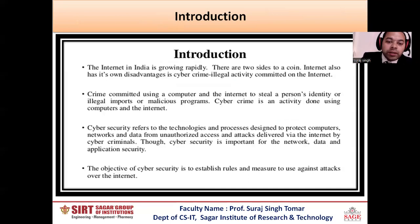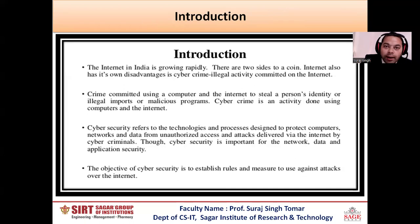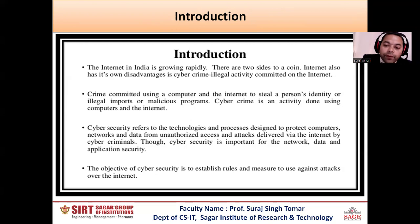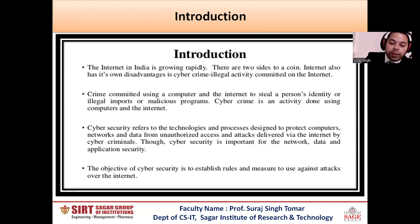The internet in India is growing rapidly — there are two sides to a coin. The internet also has its own disadvantage: cyber crime, illegal activity committed on the internet. Crime committed using a computer and the internet to steal a person's identity, or illegal imports, or malicious programs. Cyber crime is an activity done using a computer and the internet. Cyber security refers to the technology and process designed to protect computer networks and data from unauthorized access and attacks delivered via the internet by cyber criminals. Cyber security is important for network, data, and application security. The objective of cyber security is to establish rules and measures to use against attacks over the internet.